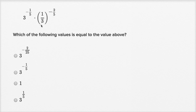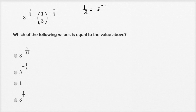The key realization here is that one-third is the same thing as three to the negative one power. And if we do that, I suspect that we're going to be able to get similar bases here. Let me rewrite the whole thing.